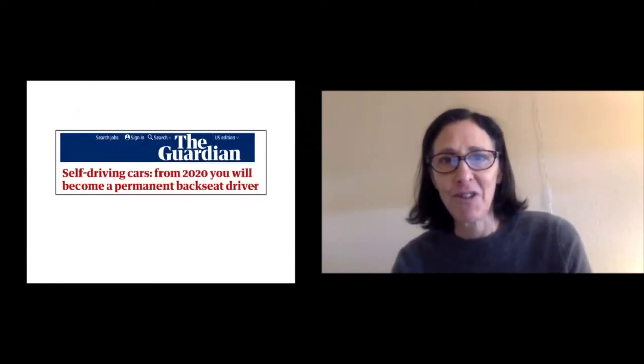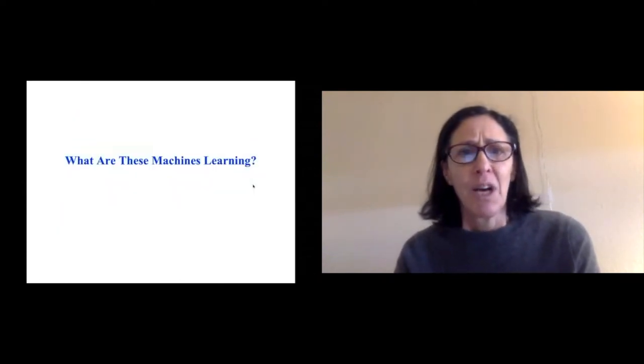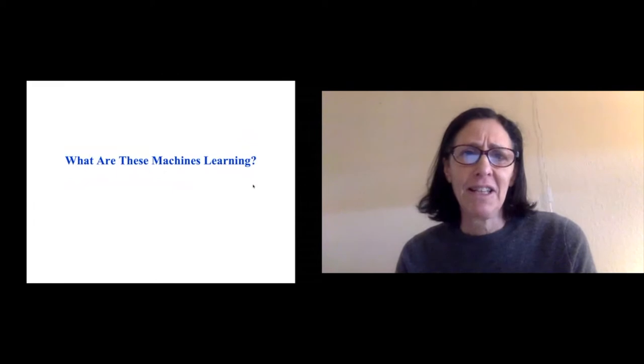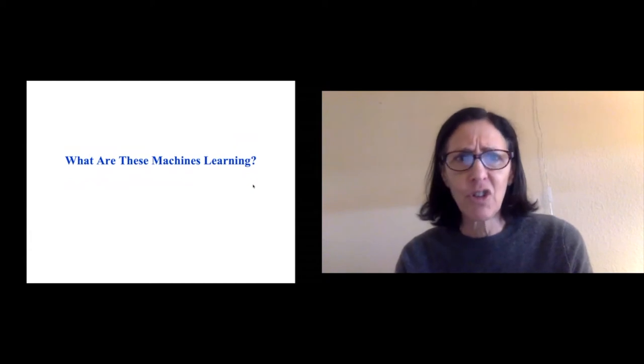The media has told us that computers are now better than humans at recognizing images, not exactly true. Captioning, reading documents and answering questions about it. Self-driving cars will be a permanent backseat driver from 2020. Well, that hasn't exactly happened yet. So the real question that is unanswered these days is what exactly is it that these machines are learning?